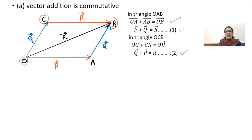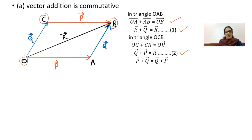Comparing equation 1 and equation 2, P bar plus Q bar equals Q bar plus P bar, and they are the same. So we have proved that vector addition is commutative.